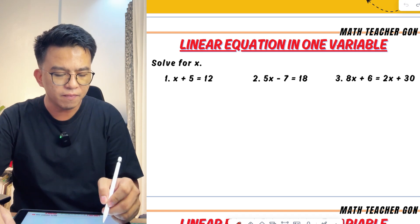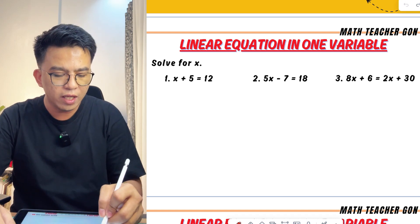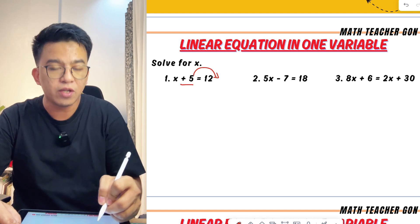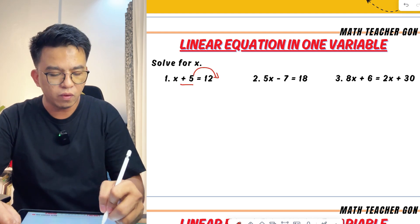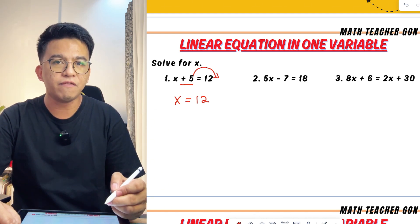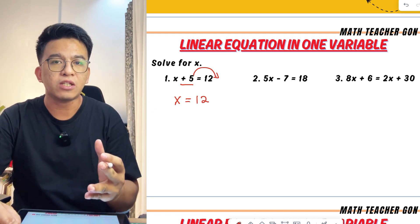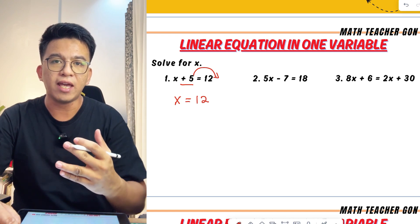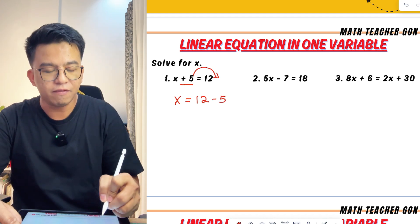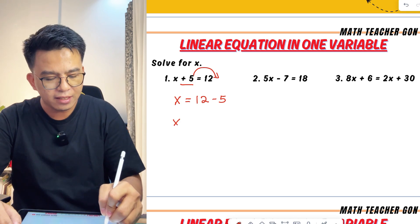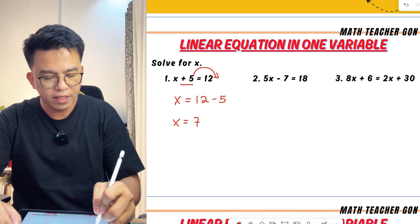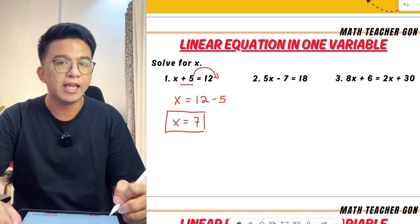For this given equation, we need to isolate the variable x, meaning we need to eliminate this plus 5. So we will transpose this 5 to the other side of the equation. Always remember, whenever you are transposing a term to the other side of the equation, we need to change its sign. From positive 5, it will become negative 5. So we have x is equal to 12 minus 5, and that would be equal to 7. This is the value of x in the given equation.